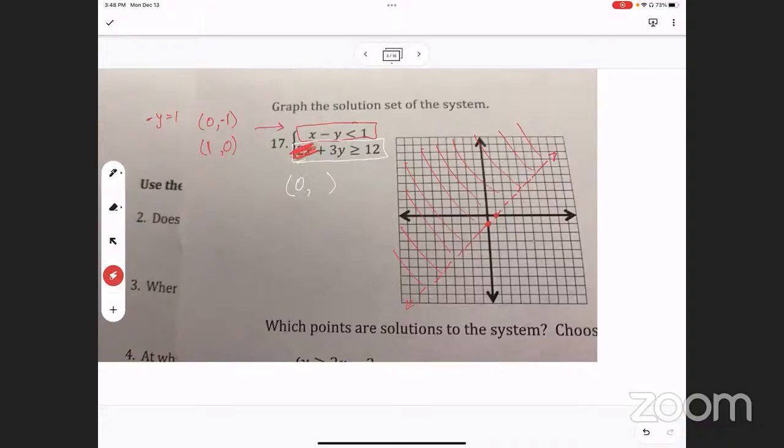So when I plug in zero for x, solve that in your head. Four, very good, y equals four. And when I plug in zero for y, solve that in your head. What's x equal? Six, very good. So zero four is your y intercept and six zero is your x intercept.